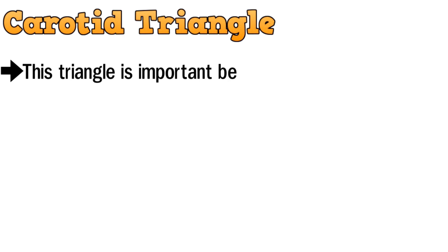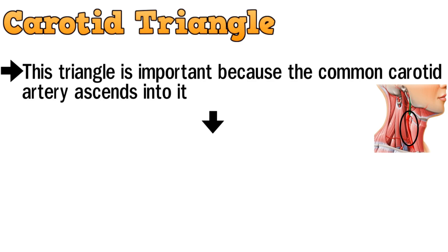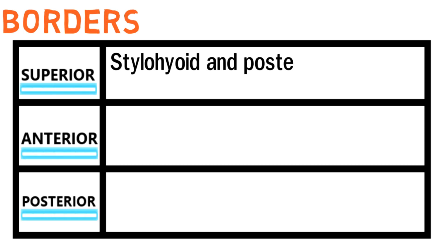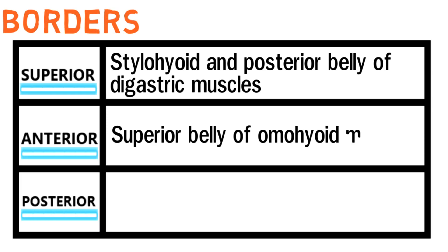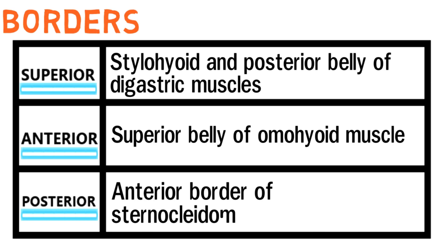Next is the carotid triangle. This triangle is important because the common carotid artery ascends into it. Its pulse can be auscultated or palpated by compressing it lightly against the transverse processes of the cervical vertebrae. The borders of this triangle are the superior, anterior, and posterior borders.